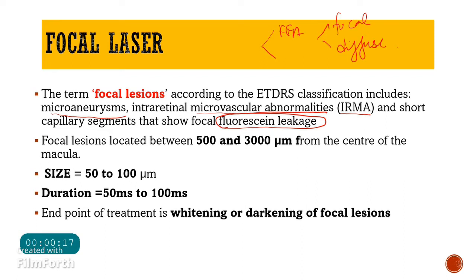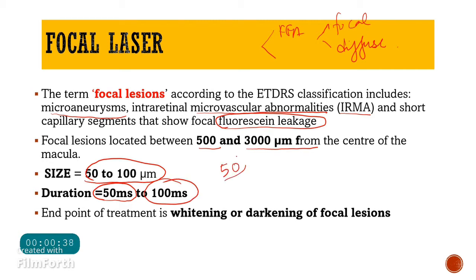Focal lesions located about 500 to 3000 micrometers from the center of the macula are treated using focal therapy. The spot size is kept at 50 to 100 micrometers and the duration is 50 to 100 milliseconds. The endpoint of laser application is whitening or darkening of the focal lesions.